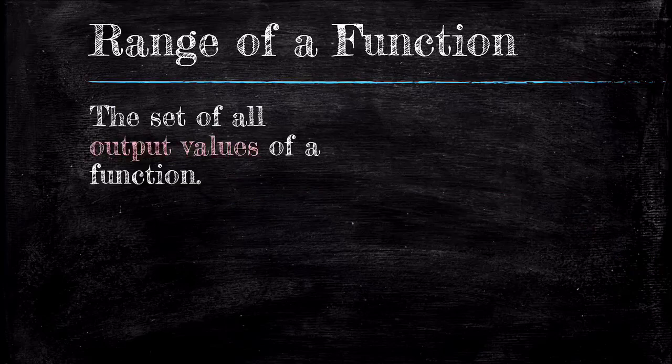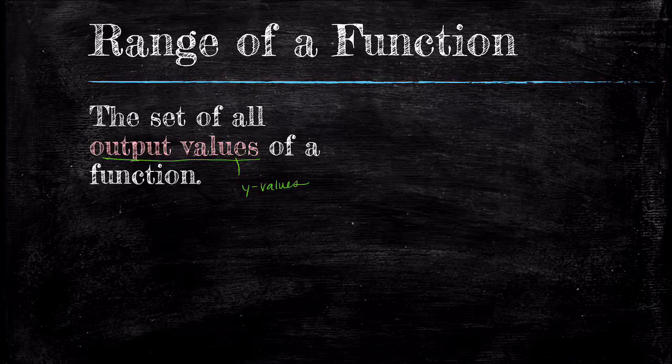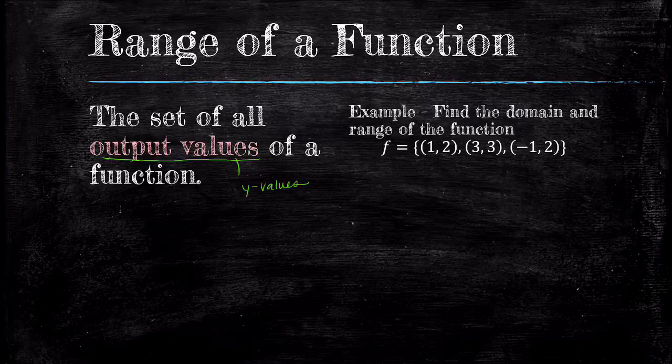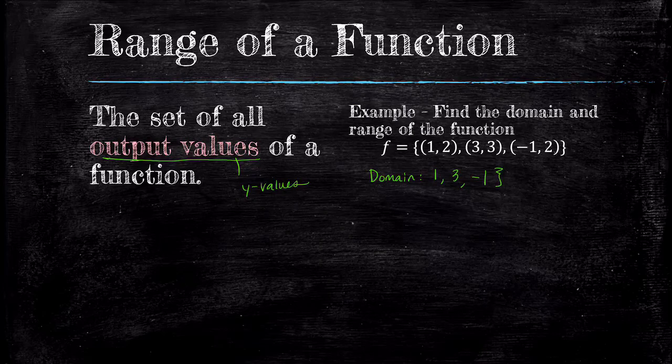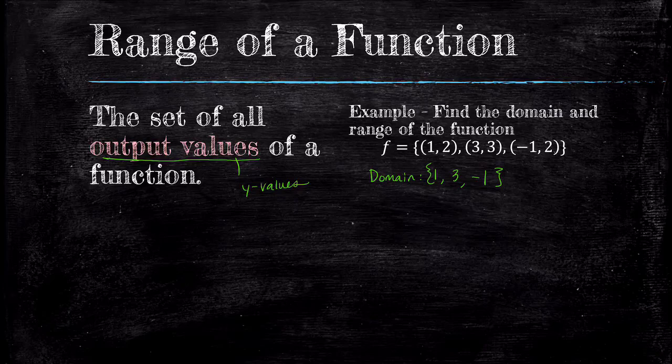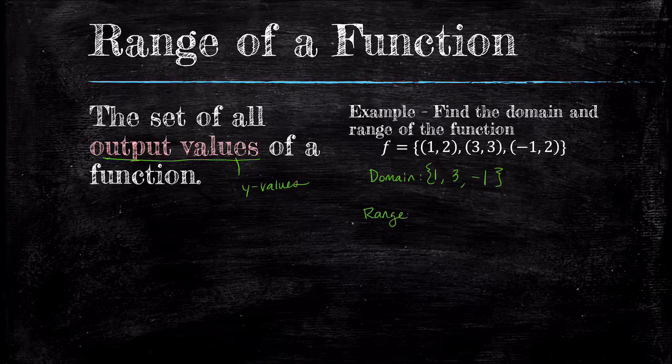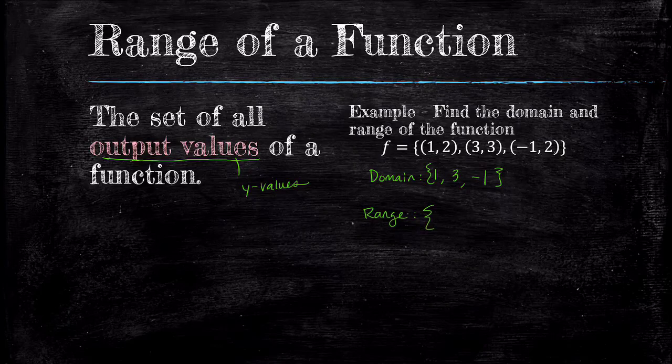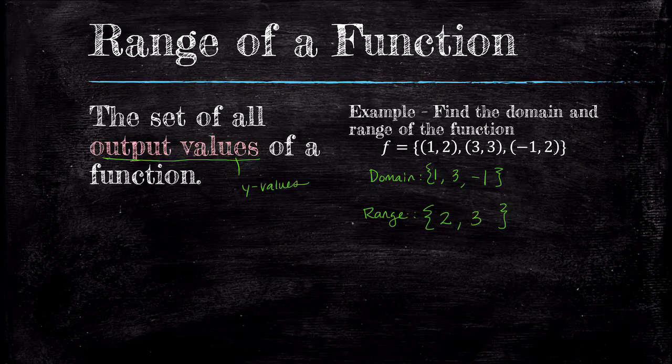Next, we have range. The range is the set of all output values of a function, typically the y values on a graph. Let's practice writing the domain and range for a simple function of three points: (1, 2), (3, 3), and (-1, 2). The domain is the list of all x values: {1, 3, -1}. Order doesn't matter. The range is the list of all y values. You should get {2, 3}.